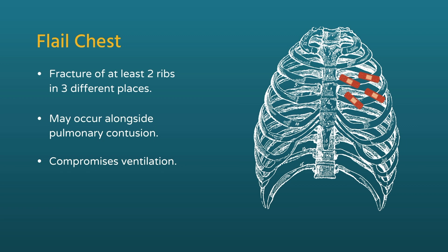Among other things, this can majorly compromise a patient's ventilation. The unstable segment is moving, and you have broken rib ends basically rubbing against one another — that really, really hurts. As a result, the patient doesn't ventilate well; they take shallower breaths. That's what we call splinting.